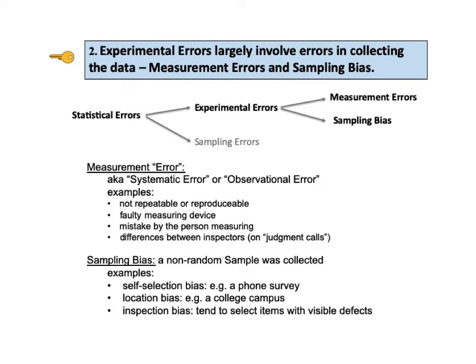Key number two says experimental errors largely involve errors in collecting the data — measurement errors and sampling bias. Measurement error is also known as systematic error or observational error. In the quality improvement discipline known as Six Sigma, there is an entire sub-discipline called measurement systems analysis, or MSA. Lack of repeatability and reproducibility are two major types of measurement errors examined in MSA. If the measuring is done with a device, the device could be faulty, or the person doing the measuring could simply make a mistake.